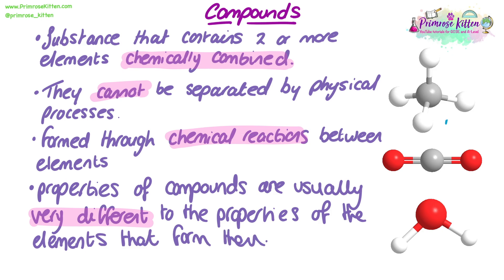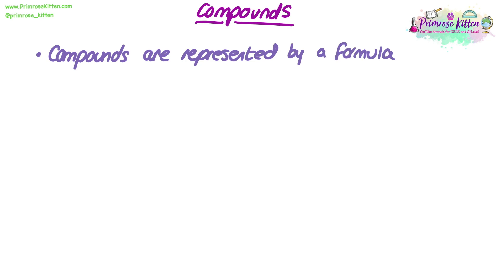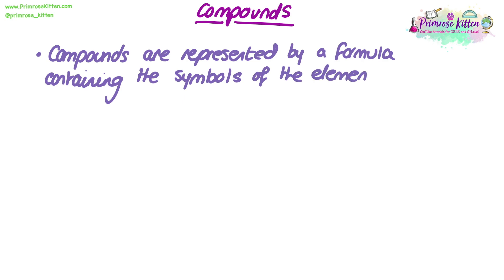Some common examples of compounds include methane — one carbon with four hydrogens; carbon dioxide — one carbon with two oxygens; and water — one oxygen with two hydrogens. These all contain multiple elements that have chemically reacted together. The formula of a compound is comprised of the symbols of the elements it contains, and it gives information about how many atoms of each element are included, represented by a small number — unless there's only one atom of that element, in which case it's just the symbol by itself.